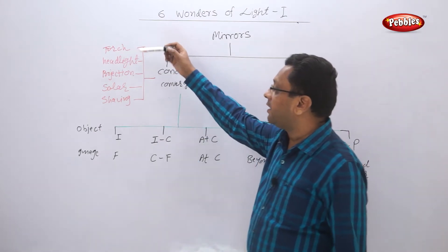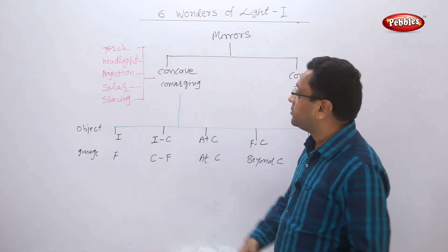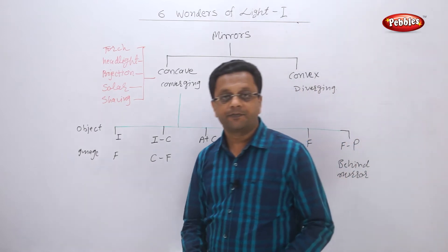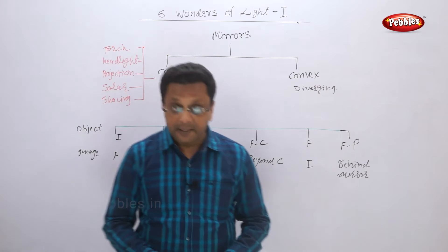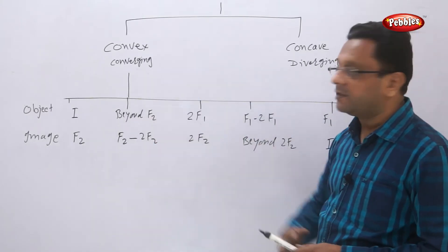Just to summarize, we use concave mirrors in torches, headlights, projectors or projection systems, then solar devices and shaving or dentist mirrors. Now let us see the summary for lenses. We have learned two types of lenses - one is convex lens and one is concave lens.